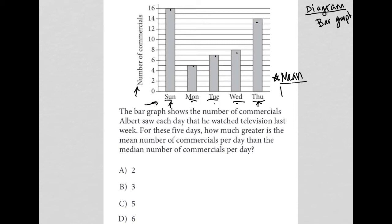So we need to figure out how many commercials in total did he see. So he saw 16 on Sunday, plus he saw five on Monday and seven on Tuesday and eight on Wednesday and 14 on Thursday. So I go to my calculator and I add all that up, 16 plus 5 plus 7 plus 8 plus 14, and I divide that by the five days.